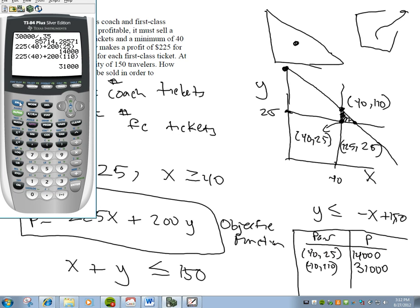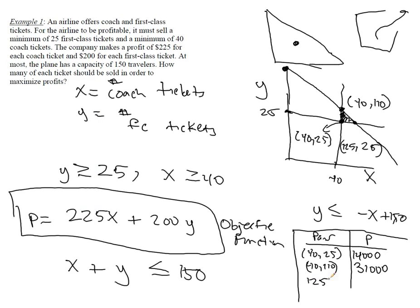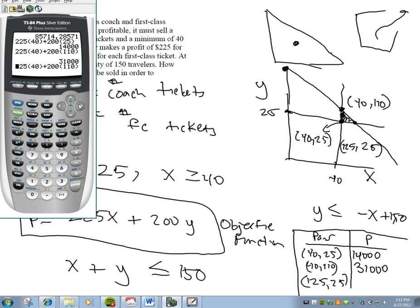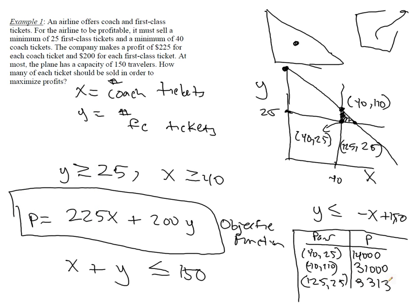And then finally, I'm going to test the last point, which is 125, 25. So this one seems pretty tempting because coach tickets earn more. So I'm going to come over here and just type in 1, 2, 5. And then I'm going to insert a parenthesis here. I put that in the wrong place. 225 times 125 plus 200 times 25, and I'm going to get a profit of 33,125.